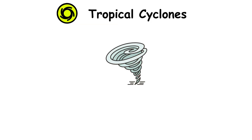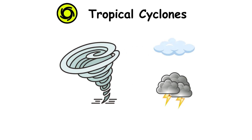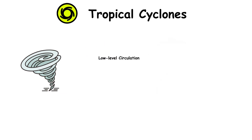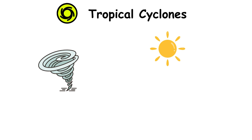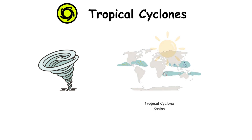Tropical Cyclones. A tropical cyclone is a rapidly rotating, organized system of clouds and thunderstorms. It has a closed, low-level circulation and a low-pressure center. Depending on its location and strength, a tropical cyclone is called a hurricane, typhoon, tropical storm, cyclonic storm, tropical depression, or simply cyclone. Tropical cyclones tend to develop during the summer, but in some regions they have been noted every month. These regions are called tropical cyclone basins.